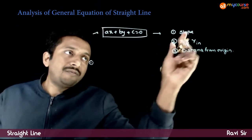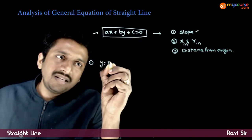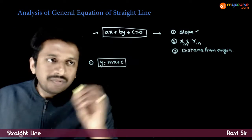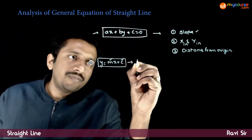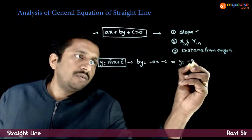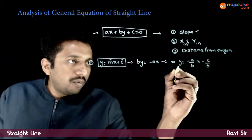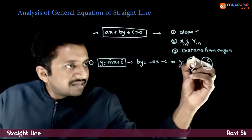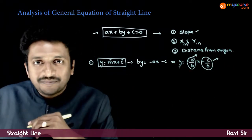First, if you want to find the slope of this straight line, you can try to convert this into the form y is equal to mx plus c. If you convert this into slope-intercept form, then slope and y-intercept will be clearly visible to you. From the equation, by is equal to minus ax minus c. This implies y is equal to minus a by b times x, minus c by b. So y is equal to something times x plus something — this represents the slope and the y-intercept of the line.